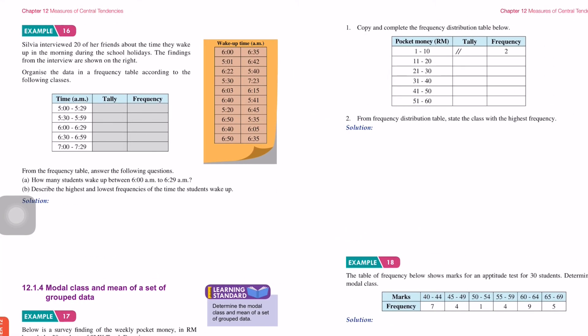Now let's look at Example 16. Silvia interviewed 20 of her friends about the time they wake up in the morning during school holidays. The findings from the interview are shown on the right. Organize the data in a frequency table according to the following classes: 5:00 AM to 5:29, 5:30 to 5:59, and so on.